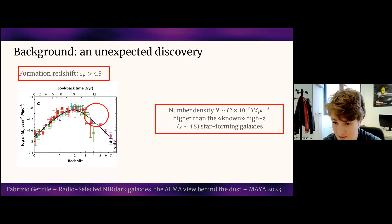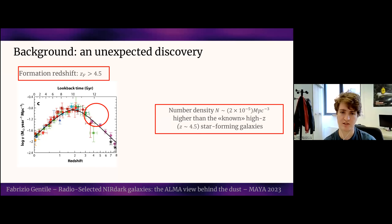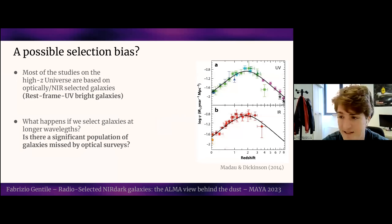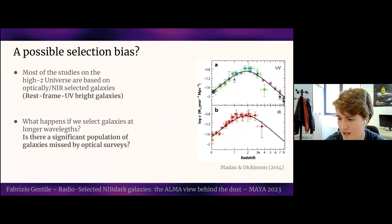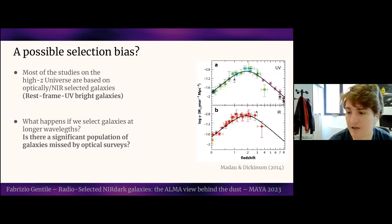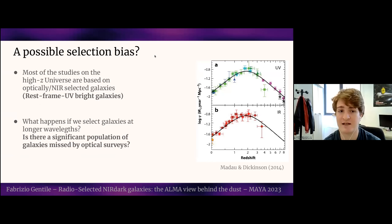We have to solve this problem, and before changing our paradigm of star formation, we should be sure we are not experiencing a selection bias. A likely selection bias could arise from the wavelengths at which we are performing our observations. In particular, most of the high-redshift galaxies known in 2014, and most studies of the star formation density at redshift higher than three, were based on optically selected galaxies. At those redshifts, that means we are studying only rest-frame ultraviolet bright galaxies, and we lack constraints at higher redshift in the rest-frame infrared. So there could be a significant selection bias if there is a population of galaxies missed in optical surveys.